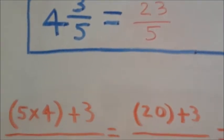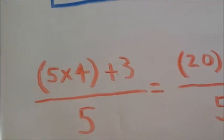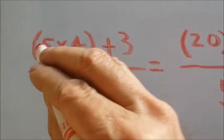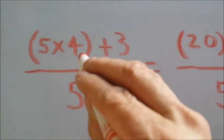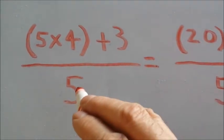Now we can also make an equation out of this process. And that would look like this. We take our denominator of 5 and multiply it by our whole number of 4. And then we add 3 over 5, which is our denominator.